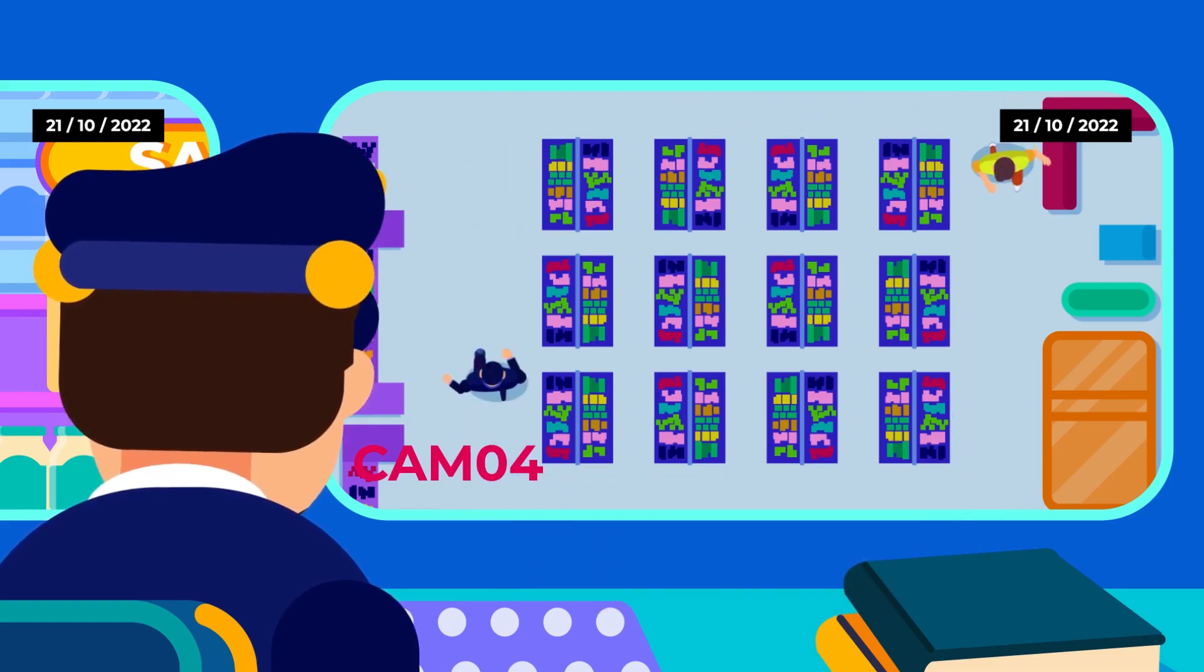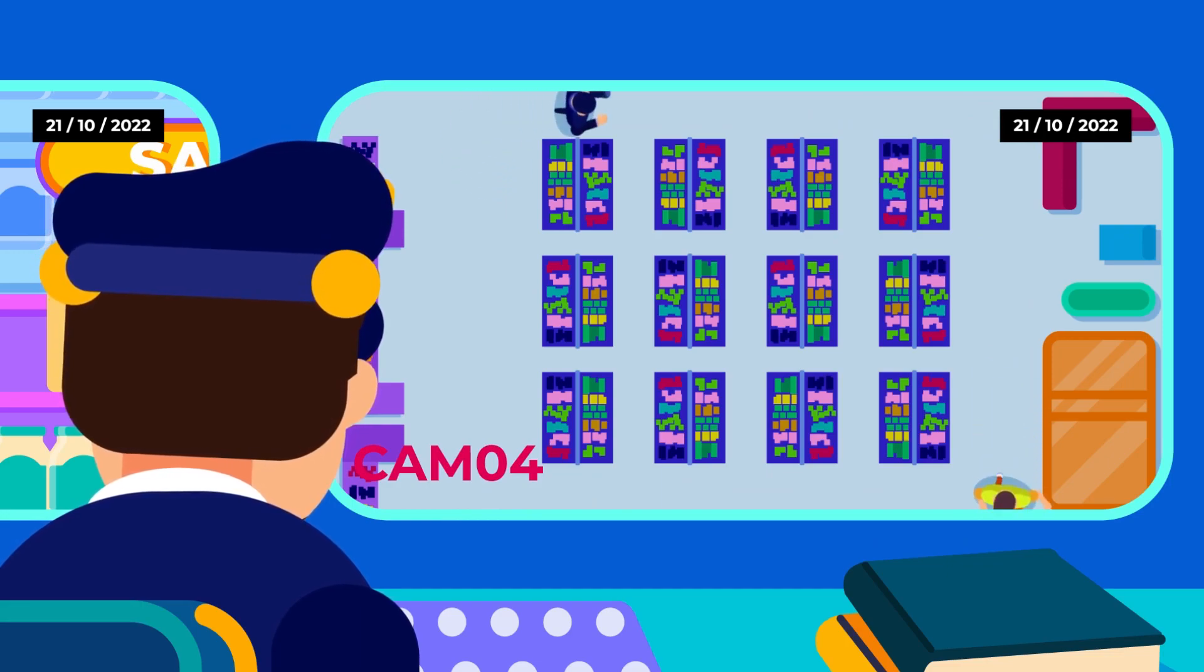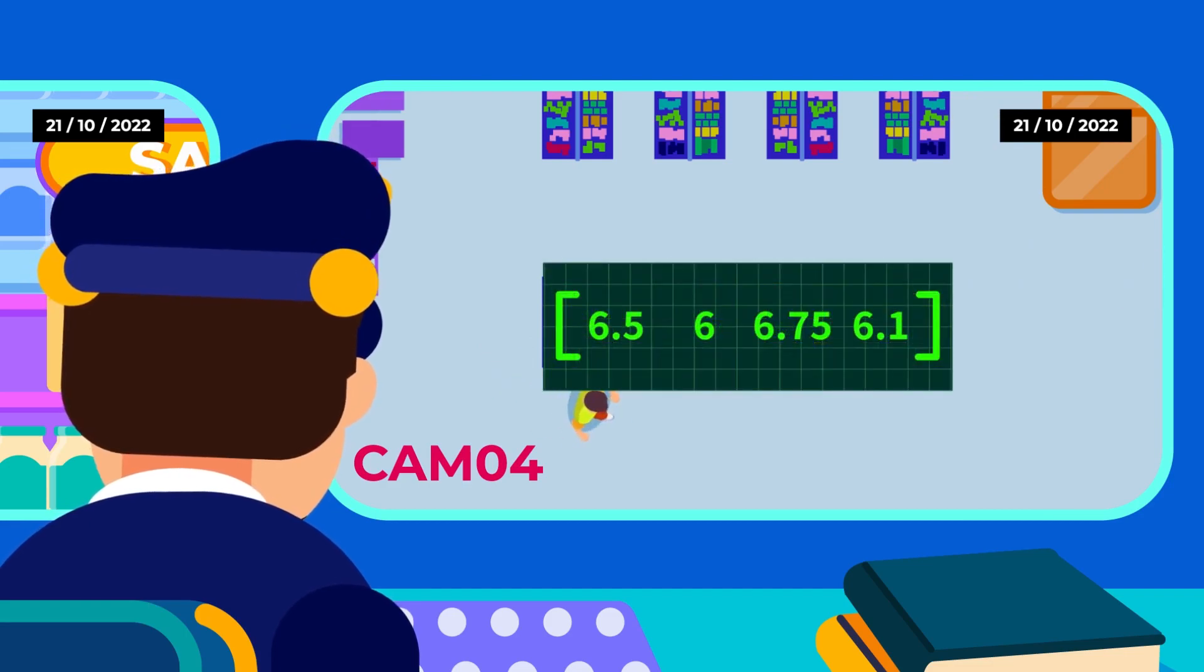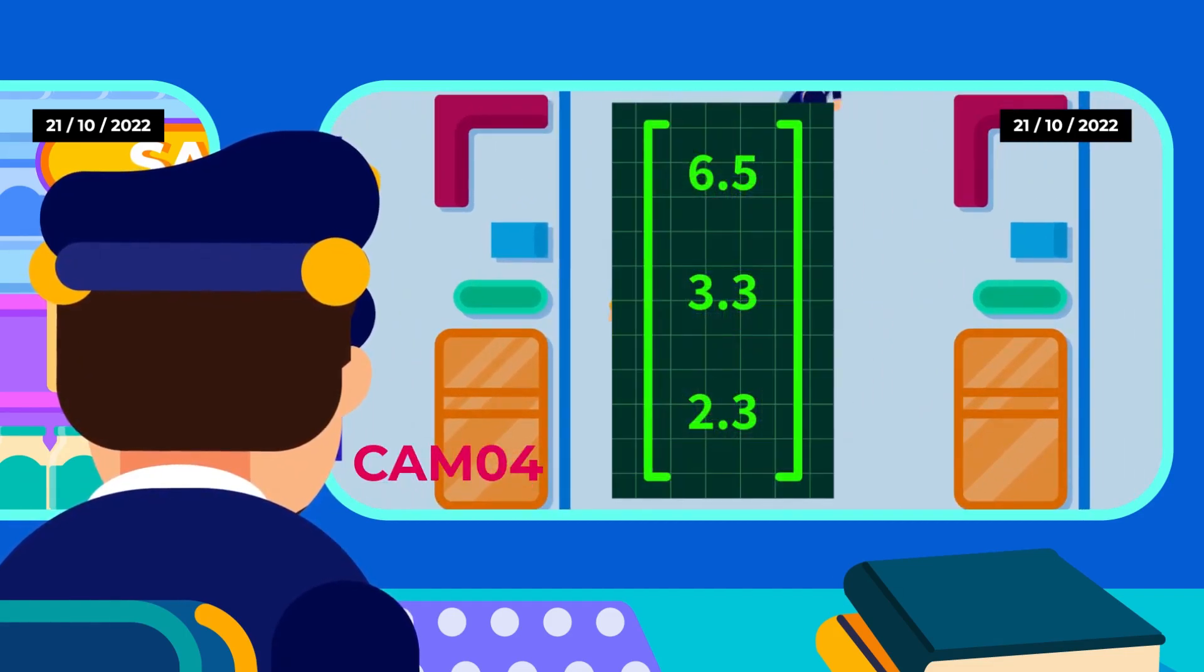Is it possible for a matrix to only have one row or one column? Yes, it's absolutely possible. Matrix with only one row is called a row matrix, whereas a column matrix has a single column.